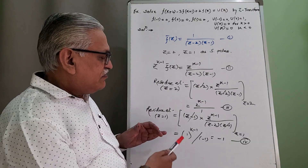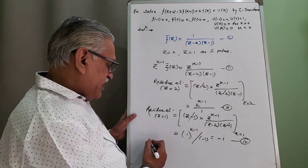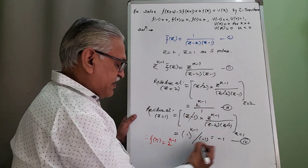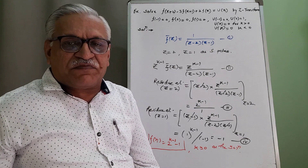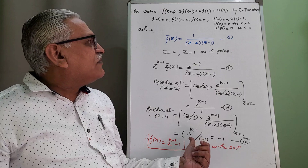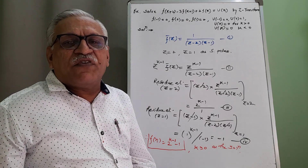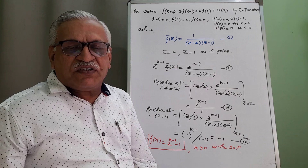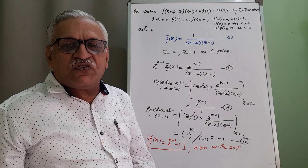The solution of the given difference equation is obtained by summing the residues at both poles. Therefore, f(k) = 2^(k−1) − 1. So far I have discussed a total of five problems including this fifth one. Watch all five videos, and if you have any doubt about solving difference equations by Z-transform, write your difficulty in the comment box. Please like, share, and subscribe to my channel, and press the bell icon for notifications. Thank you for watching.